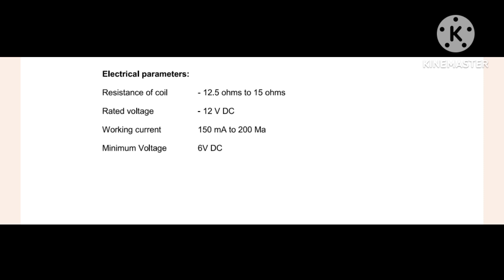Based on the voltage, the working current varies from 150 milliamperes to 200 milliamperes. If the battery is getting low, the voltage may fall to 10, 11, or 9 volts, and the current varies accordingly. That is the reason the working current is stated as a range of 150 to 200 milliamperes. The maximum voltage should not be more than 12 volts DC, and the minimum voltage should not be less than 6 volts DC.